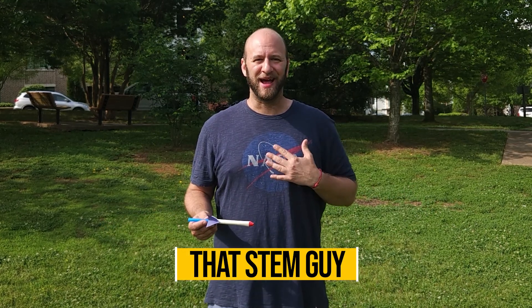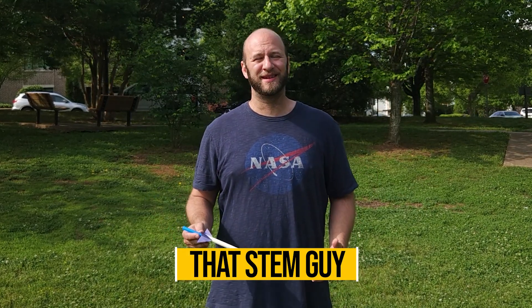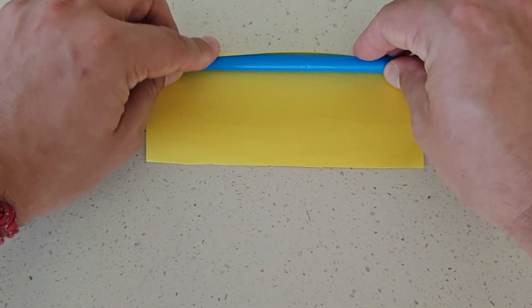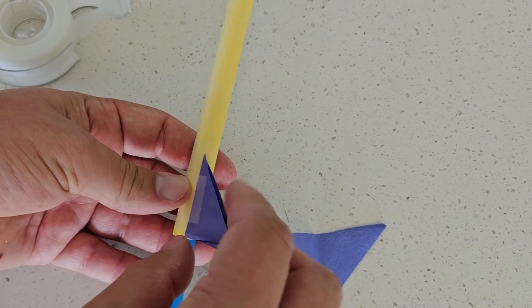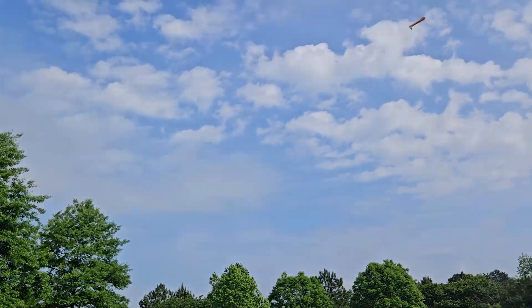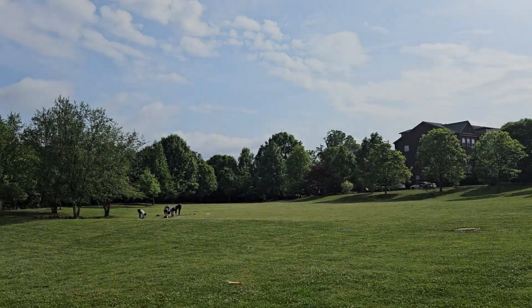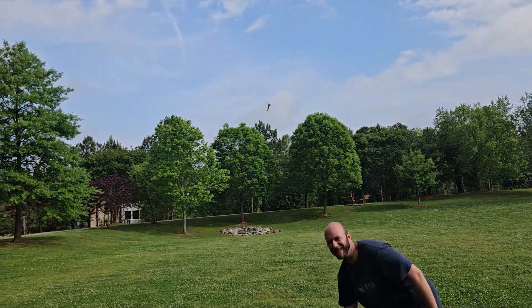What's up everybody, That Stem Guy here and today I have an awesome DIY rocket build for you. We are going to take the concepts we learned when we put together our straw rockets, but instead of using our lungs to power our rocket, we're going to redesign the launch system so that we use our entire body weight to send our rocket high up into the sky. These are stomp rockets. Let's dive into the build.